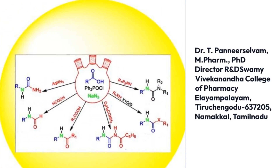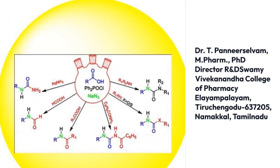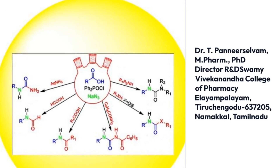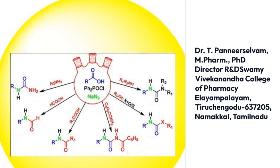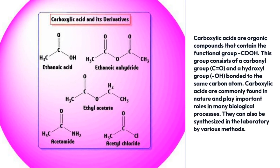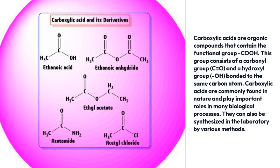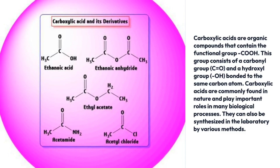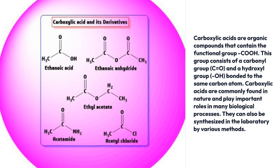In this video we are going to see about carboxylic acid and its derivatives. Carboxylic acids are organic compounds that contain the functional group C-O-O-H. This group consists of a carbonyl group (C double bond O) and a hydroxyl group (O-H) bonded to the same carbon atom.